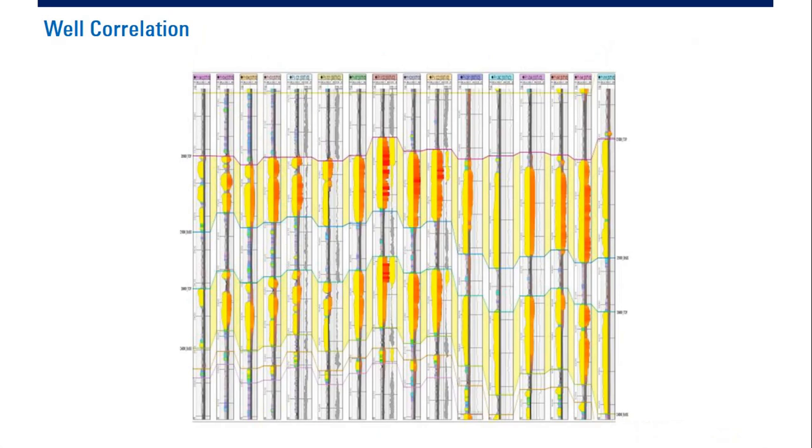This is another well correlation. So you can know the area of your reservoir. This one, one reservoir. This is another reservoir. You know the distribution. You know the continuity of your reservoir. Atau kalau kami sering membahasnya pelamparannya. Melampar reservoirnya sejauh apa. We can plot that with well correlation.